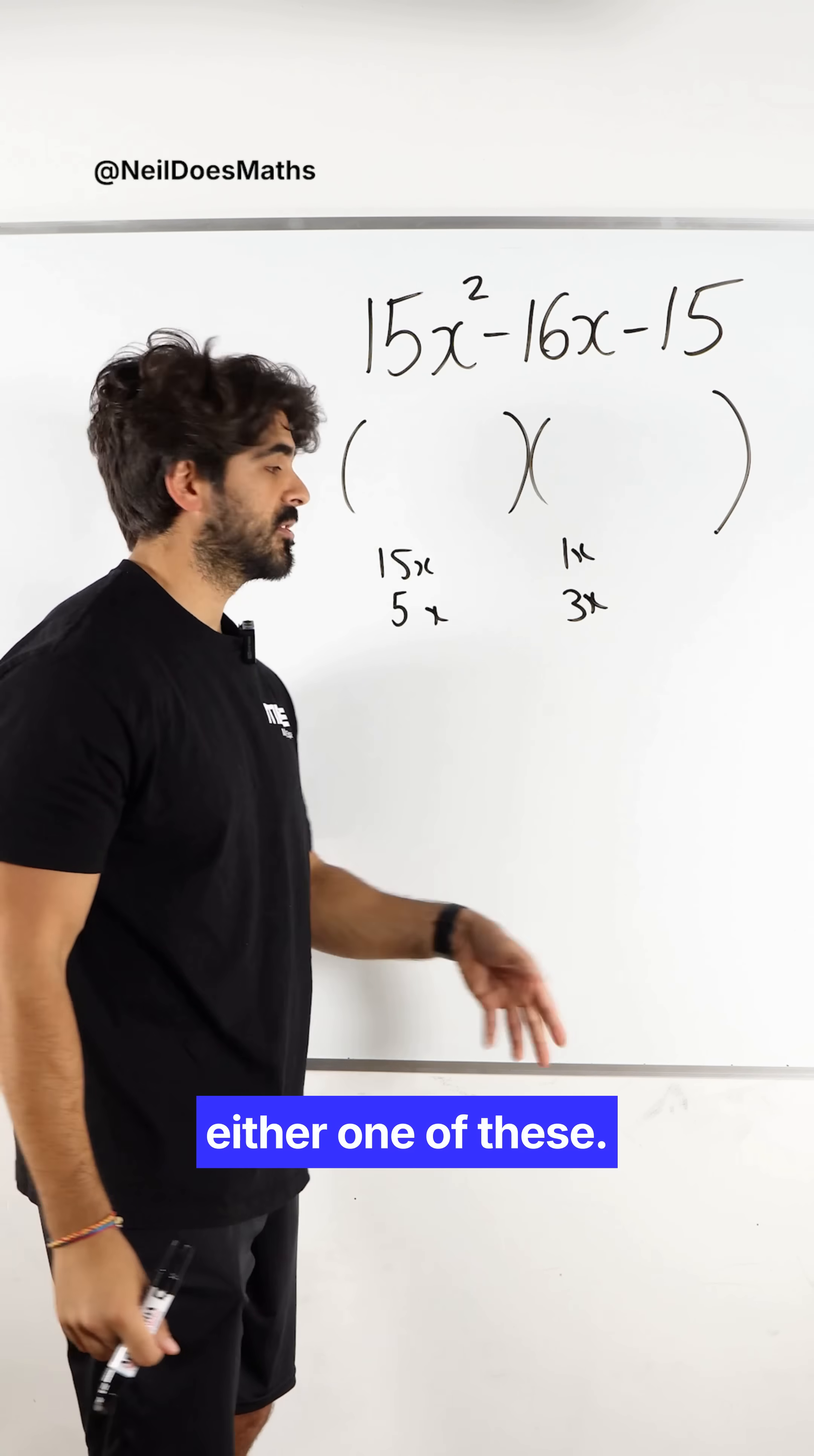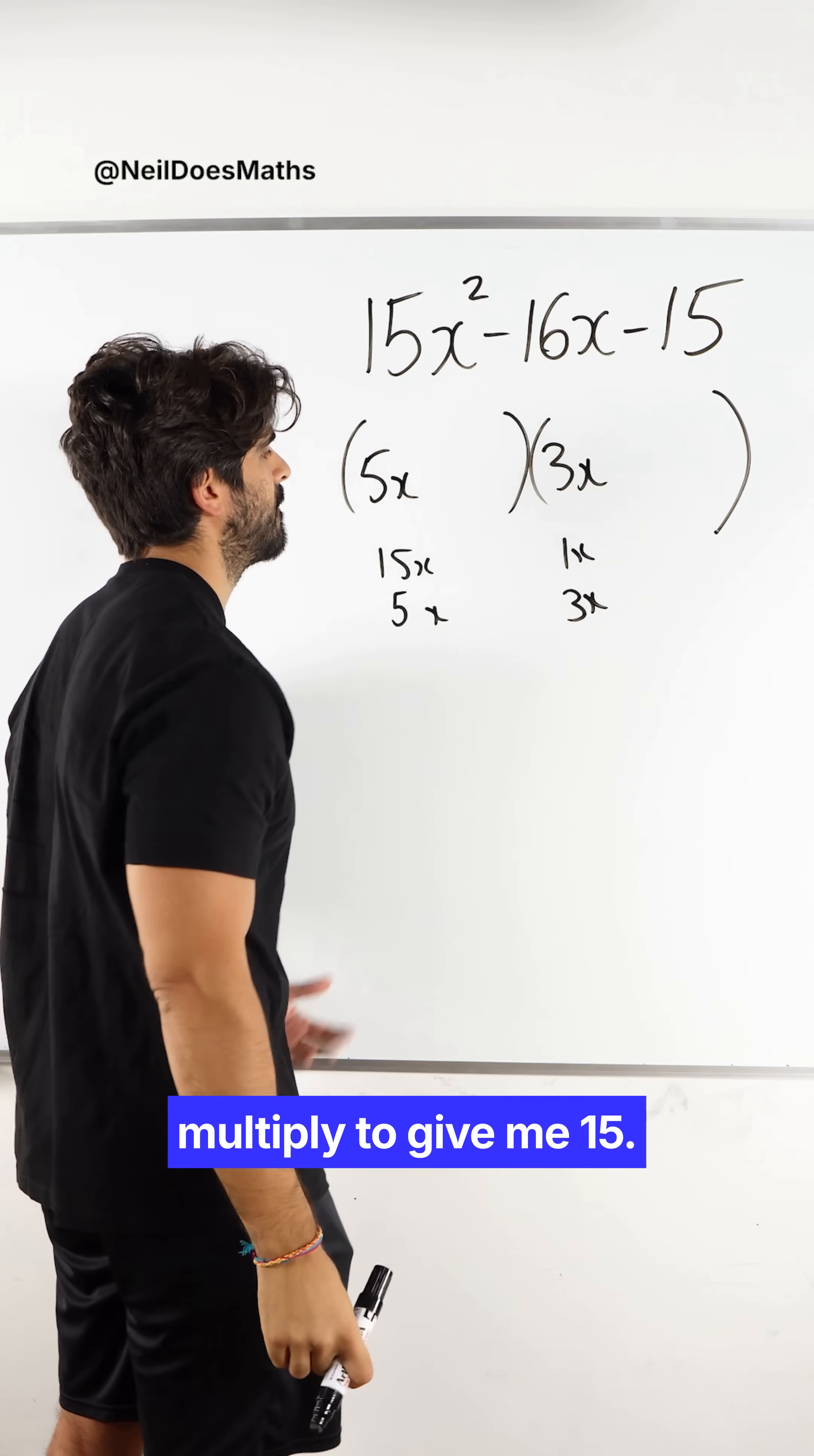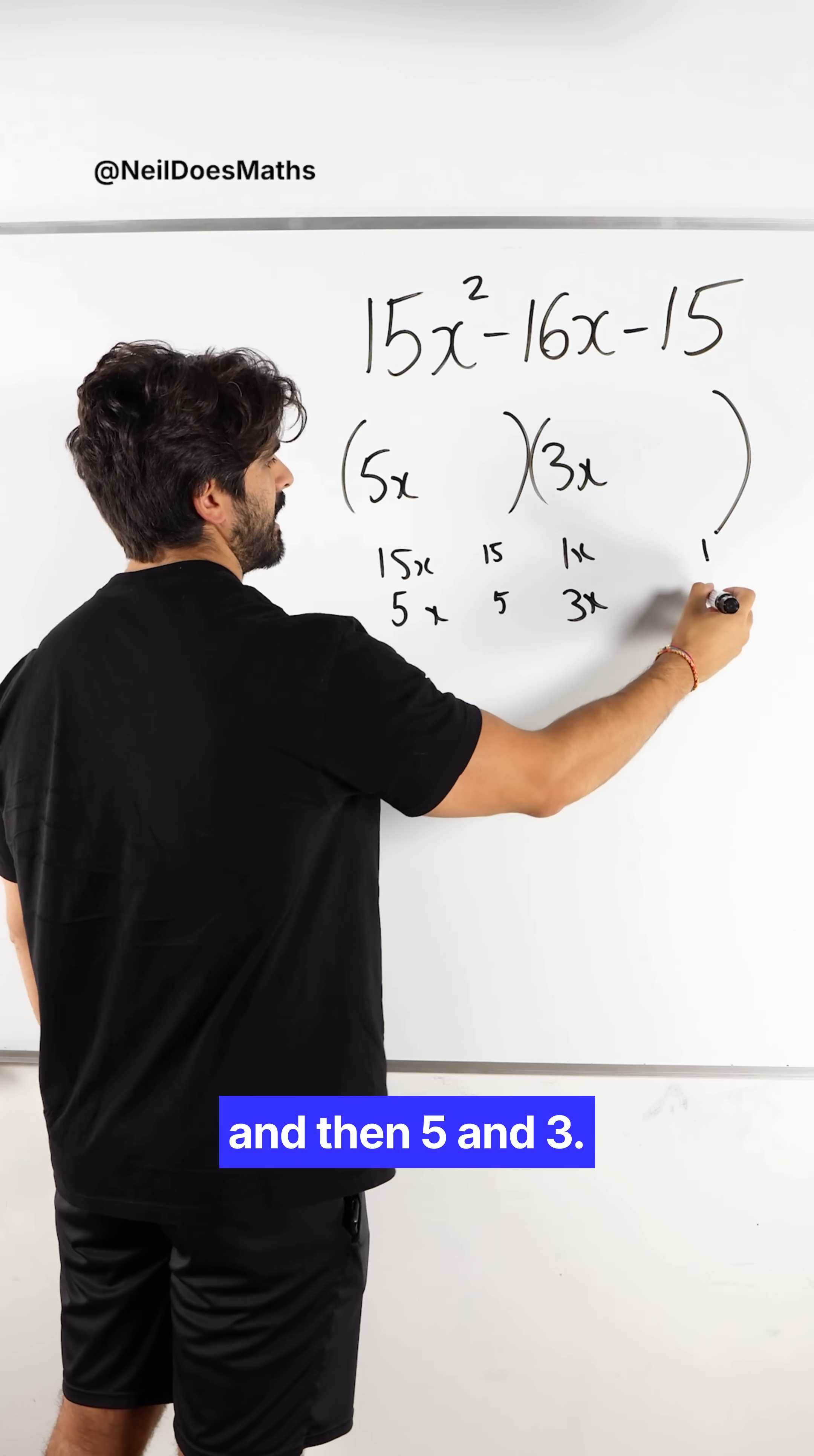Now we can choose either one of these. We generally stick with the closest pair and then we see what happens. 5x and 3x. Same thing over here. These two numbers need to multiply to give me 15.